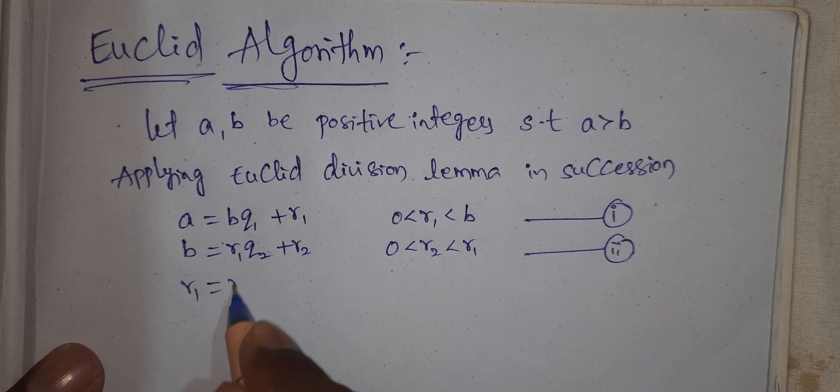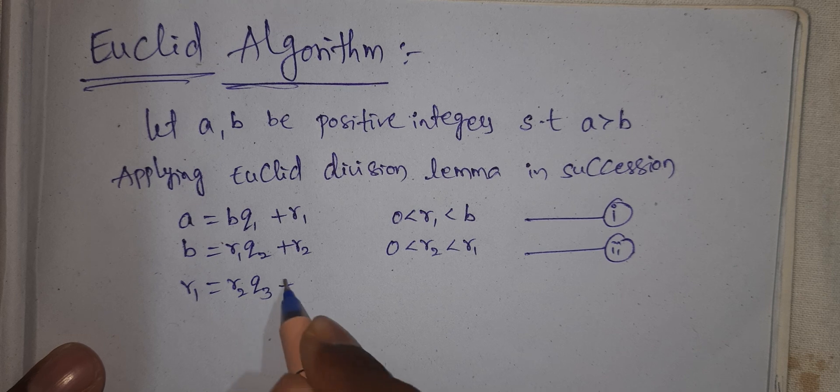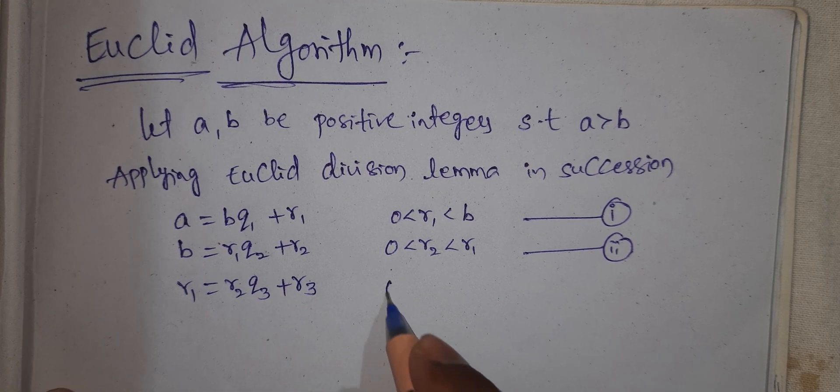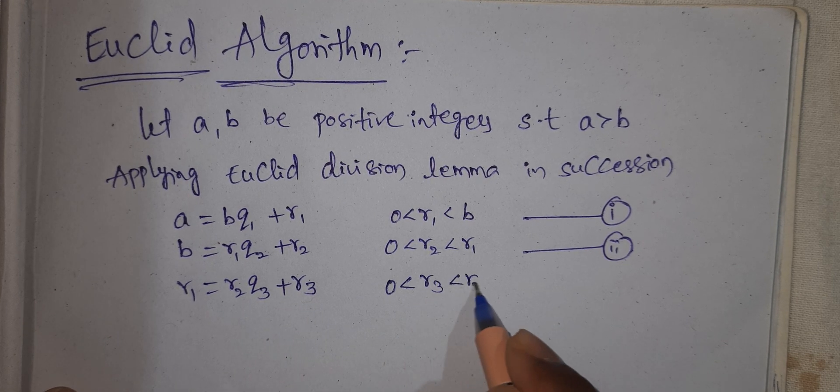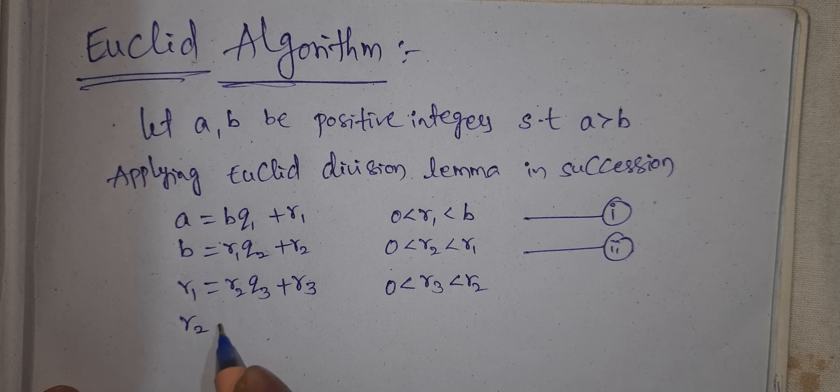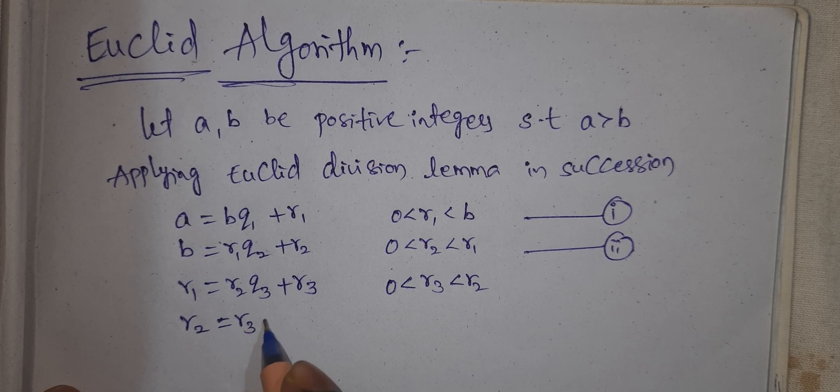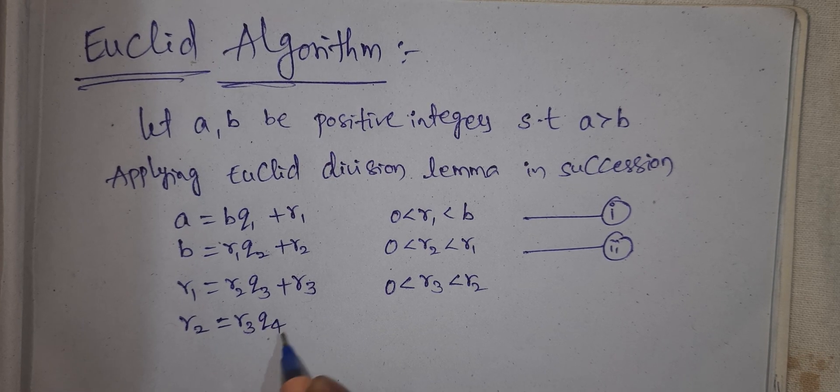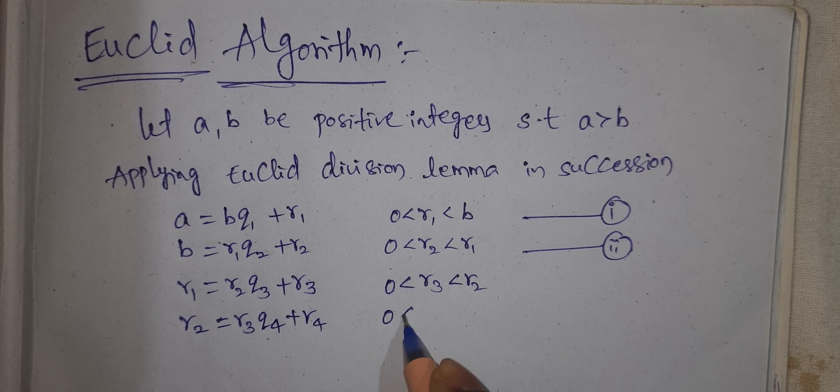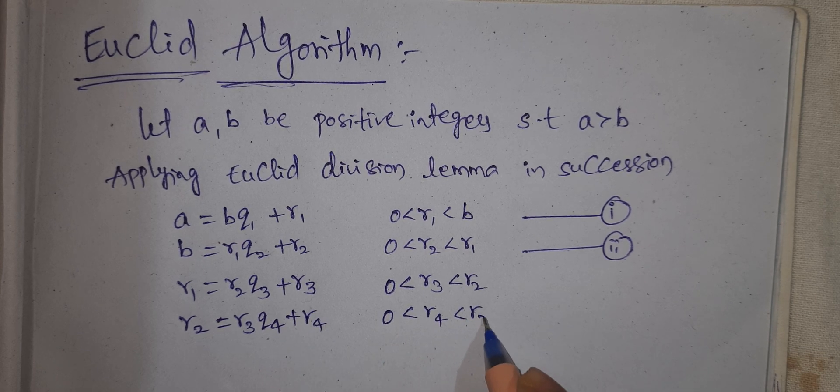And R1 equal to R2 Q3 plus R3, 0 less than R3 less than R2. R2 equal to R3 Q4 plus R4, 0 less than R4 less than R3.